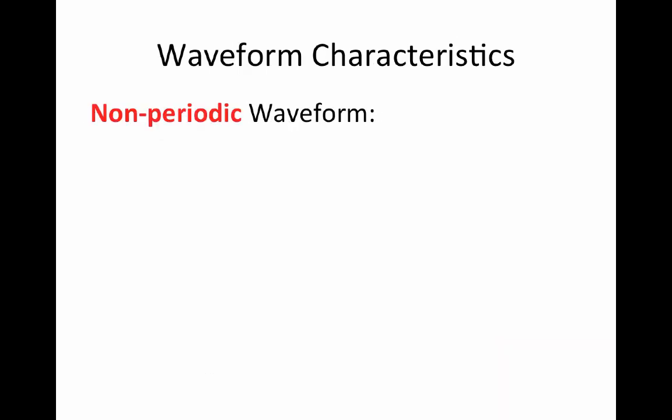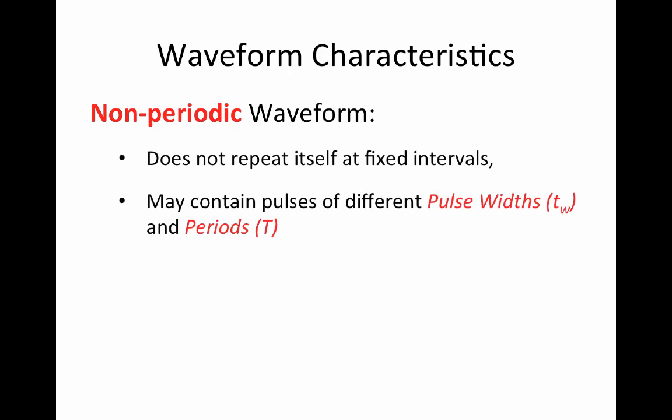Waveform characteristics. Digital system waveforms are comprised of a series of pulses. Waveforms can be classified as either non-periodic, one that does not repeat itself at fixed intervals. It may be composed of randomly different time intervals between the pulses and or randomly different pulse widths.